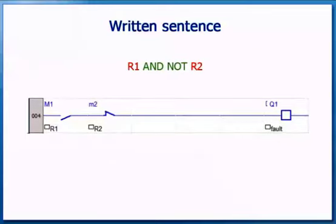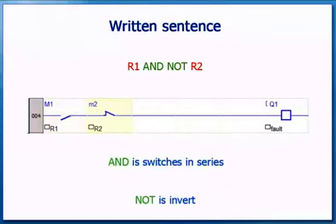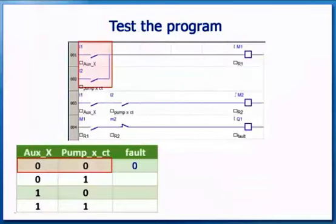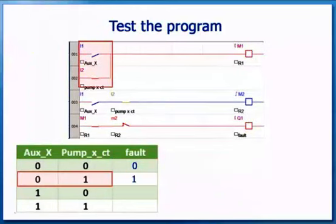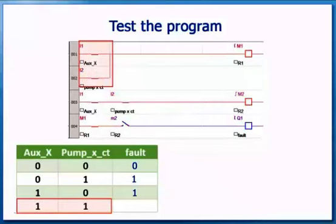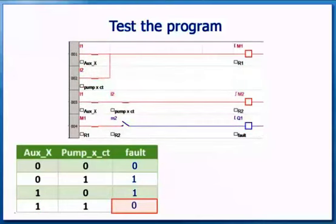We rewrite our sentence substituting R1 and R2. AND means they are in series, and NOT means we invert R2. We can now bring it all together and show our three lines of code. The next step is to test if our program truth table matches the desired one. Both inputs off: fault indicator is off. Auxiliary X off and PUMPXCT on: fault indicator is on. Both inputs on: fault indicator is off. The truth table matches, so the program works.